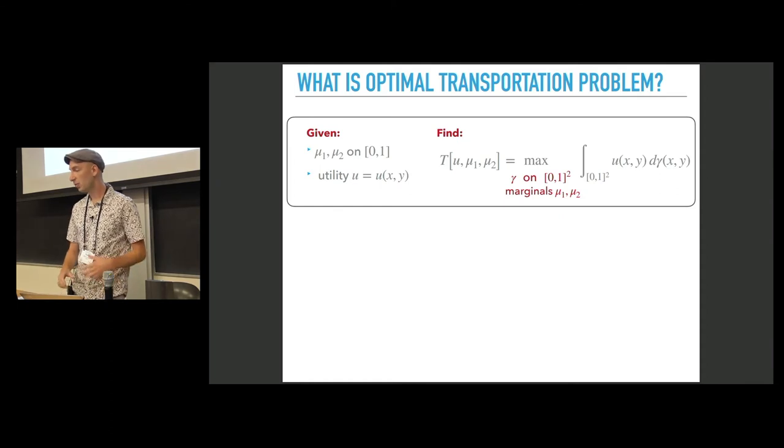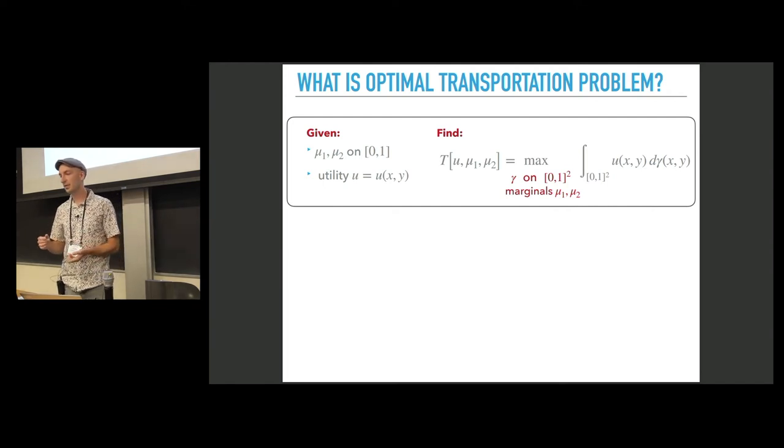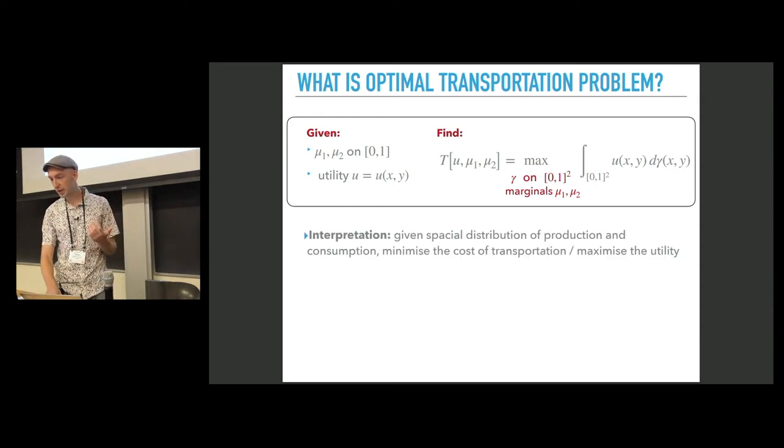Our goal is to find a distribution gamma on the unit square that has mu 1 and mu 2 as marginals and maximizes the expected utility. We will denote the value of this problem by T of u of mu 1 and mu 2.